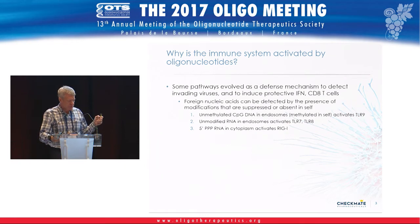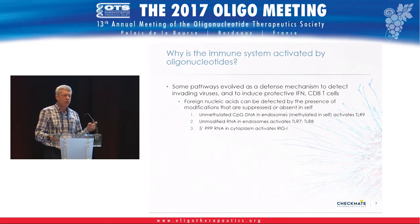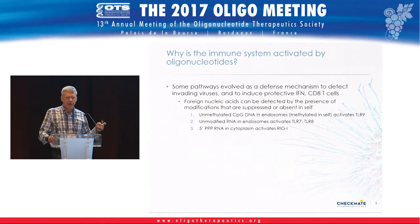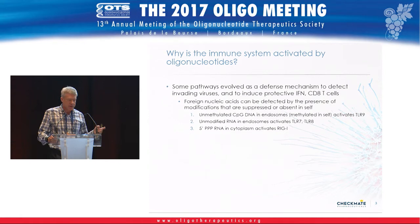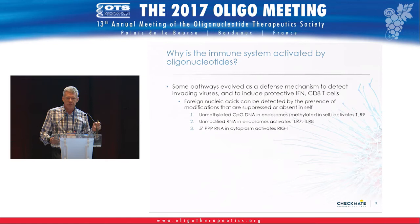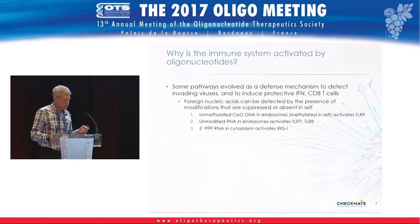Some examples involve foreign nucleic acids detected by modifications not present in our own bodies. Perhaps the best example is unmethylated CpG DNA. In our genome, when a C is followed by a G, the C is normally methylated at the five position, whereas in bacterial and viral DNAs, CpG is unmethylated. This is an unambiguous sign of an invading pathogen — a reliable signal that triggers immune activation through toll-like receptor 9.